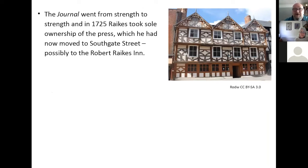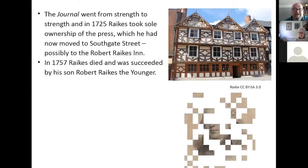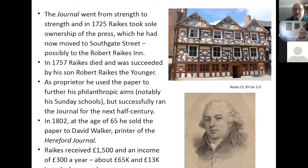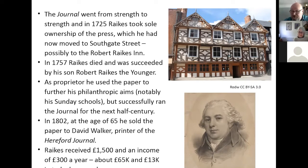The journal went from strength to strength. In 1725, Raikes took sole ownership — he and William Dicey parted ways amicably. We think Raikes had now moved to Southgate Street, possibly to Robert Raikes Inn or the Robert Raikes House. In 1757, Raikes died and was succeeded by Robert Raikes the Younger, who used the paper to further his philanthropic aims and successfully ran it for the next 50 years. In 1802, when he was 65, he sold it to David Walker, a printer of the Hereford Journal, receiving £1,500 and an income of £300 a year — about £65,000 and £13,000 a year in today's money. The journal continued to go from strength to strength.